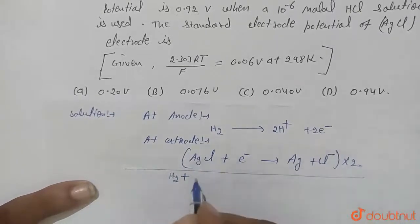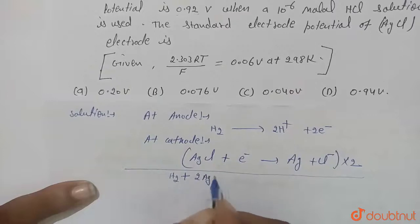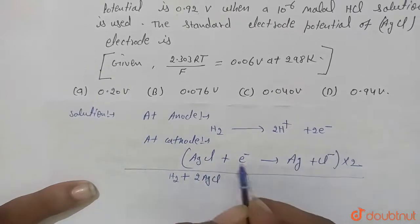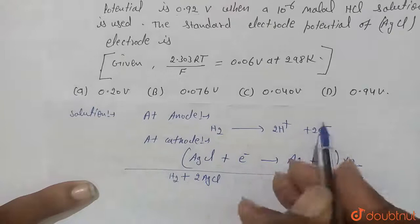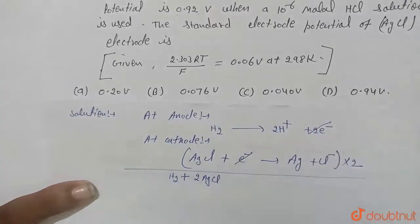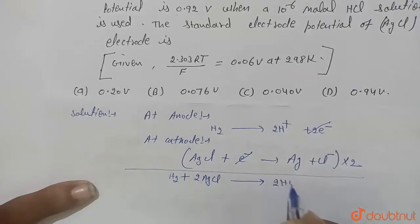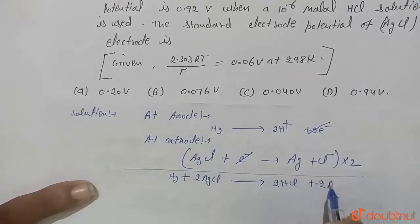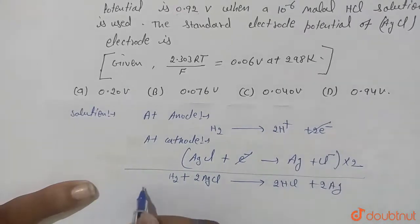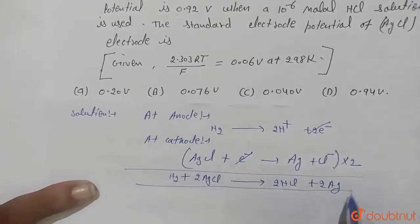Then it will become 2 electrons, and this will be cancelled out. Now H2 plus 2HCl plus 2AgCl gives 2HCl plus 2Ag remaining. This will be our reaction.